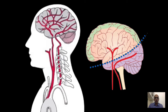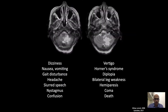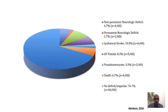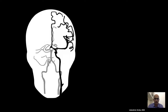The brain is supplied by two arterial systems: anterior, supplied by the internal carotid, and posterior, supplied by the vertebral arteries. Damage to the vertebral artery can cause serious symptoms. Fortunately, the vast majority of these injuries are asymptomatic, because we are blessed with two vertebral arteries. If one vertebral artery is injured, the contralateral side can supply the posterior circulation.